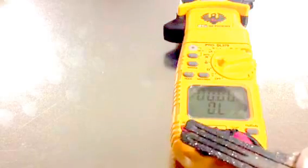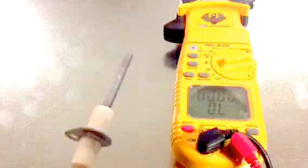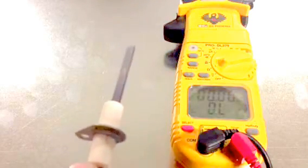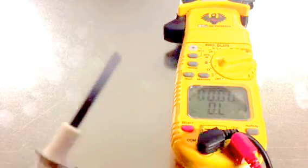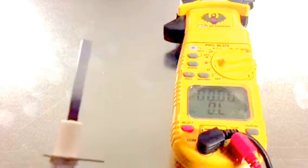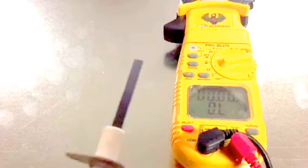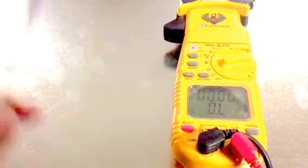So silicon carbide, anything over a hundred ohms, need to talk to the homeowner about replacing it. Silicon nitride, brand new they're 11 to 18, so I would say anything that's significantly higher than that, I would at least talk to them about replacing it.